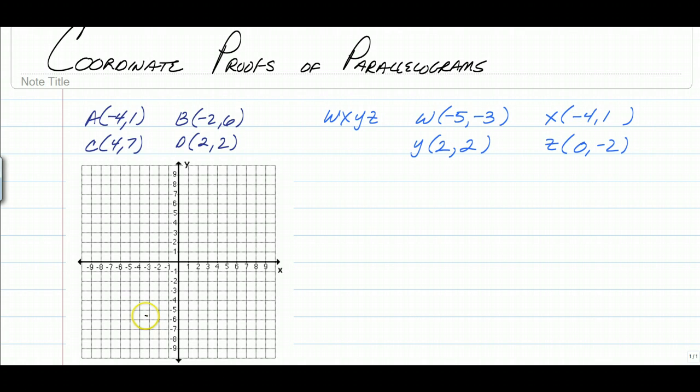If you have a coordinate plane, it's even easier. If not, it's still fairly simple. So we'll start with the one that's given a coordinate plane. First thing you're going to need to do is plot all of these points. So we have A at negative 4 comma 1, B at negative 2 comma 6, C at 4 comma 7, and D at 2 comma 2.